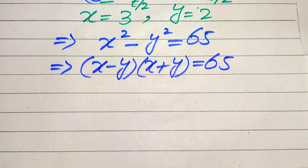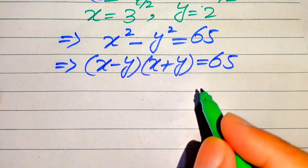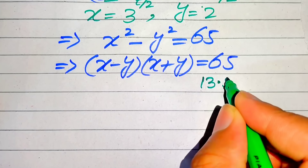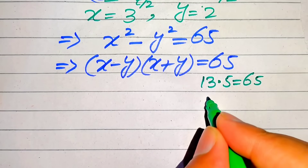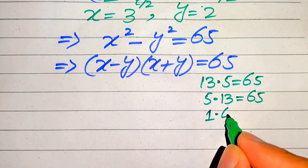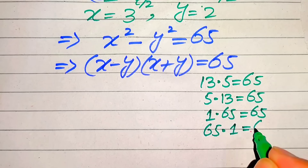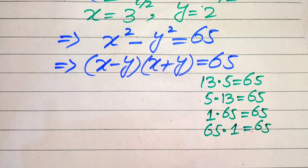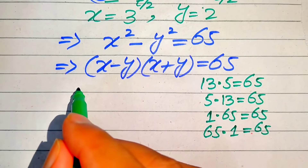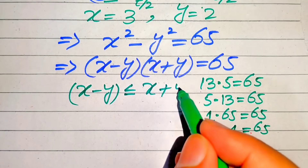On the left-hand side we have two factors multiplied together, but on the right-hand side we have only one factor. First we find the possibilities in which the product of two numbers equals 65: 13 times 5, 5 times 13, 1 times 65, and 65 times 1. We note that x minus y is always less than or equal to x plus y.